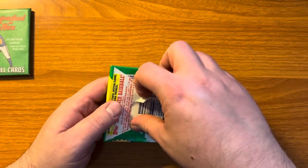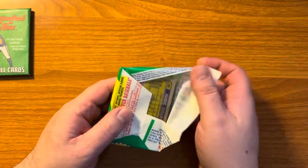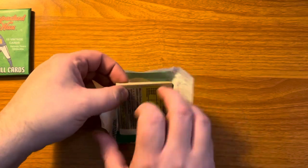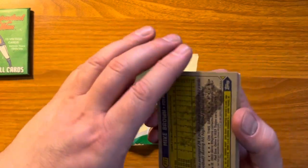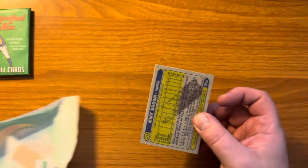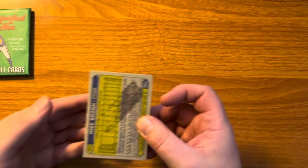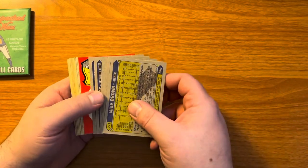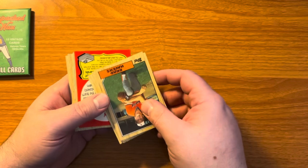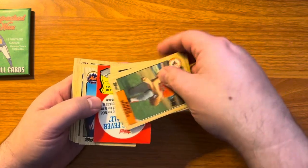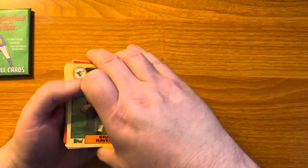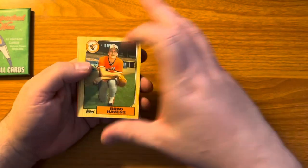1987 Topps, the wood grain backed cards. Lots of fun opening these as a kid. That's a heck of a gum stain there. Don't eat the gum. I will not eat the gum. That's a disclaimer right there. Anybody who wants to comment eat the gum, you're at the wrong place. I'm not going to do that.